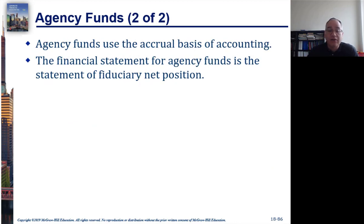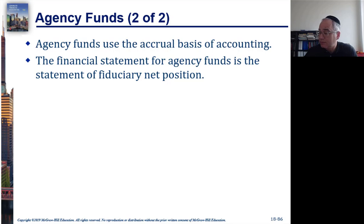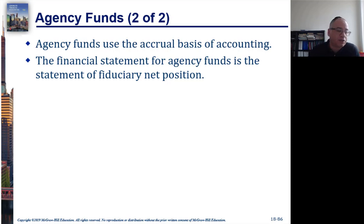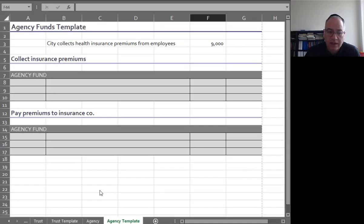Agency funds don't have any income statement because they can't earn any income — everything belongs to somebody else. They have something called a statement of fiduciary net position, which is just a balance sheet. That's all they have is a balance sheet.